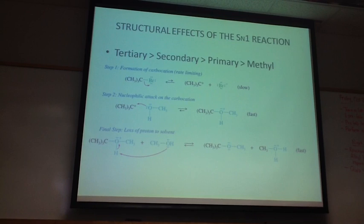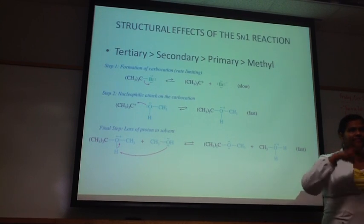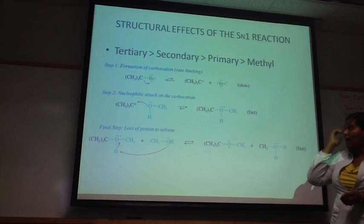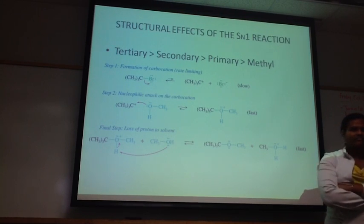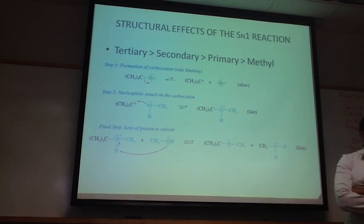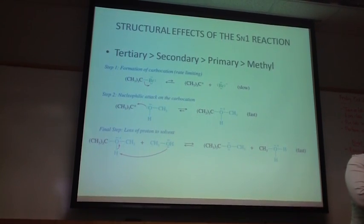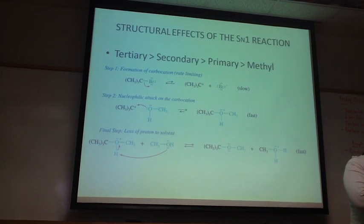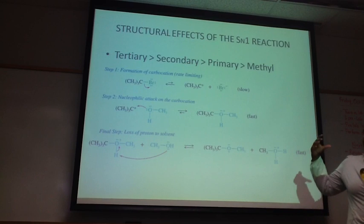To review, in our SN1 mechanism, the leaving group leaves first to form a carbocation and our nucleophile attacks. If your nucleophile is ethanol or water, you need an extra step to remove that proton. Can you tell me why the predicted trend of tertiary is greater than secondary, and so on, is the way it is? Is it the least substituted? Substitution? Yes. Why is that important? Carbocation, right? So remember how the carbocation formation is the rate-determining step. So whichever one is the most stable, it will be the fastest, and that's why it's the opposite of SN2.